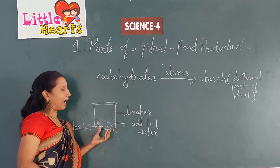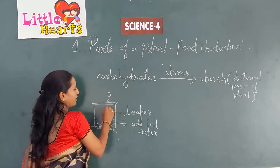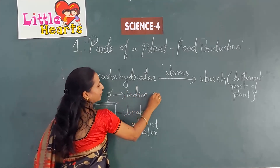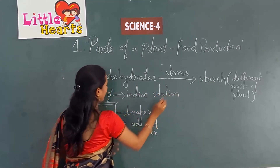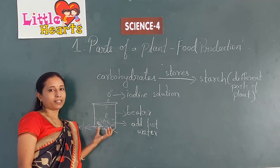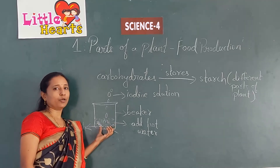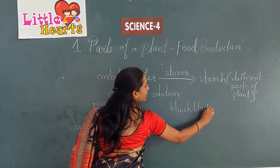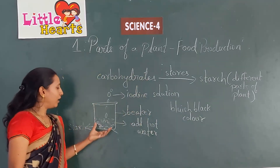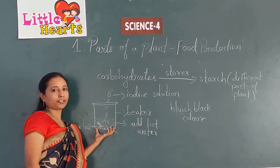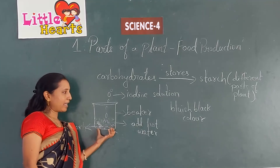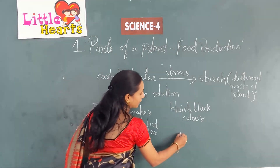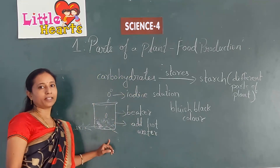After cooling, add a few drops of iodine solution to the starch solution. When iodine solution is added to the starch solution, it turns bluish-black in color. The starch solution changes to bluish-black color because starch is present in the solution. Adding iodine shows the presence of starch.